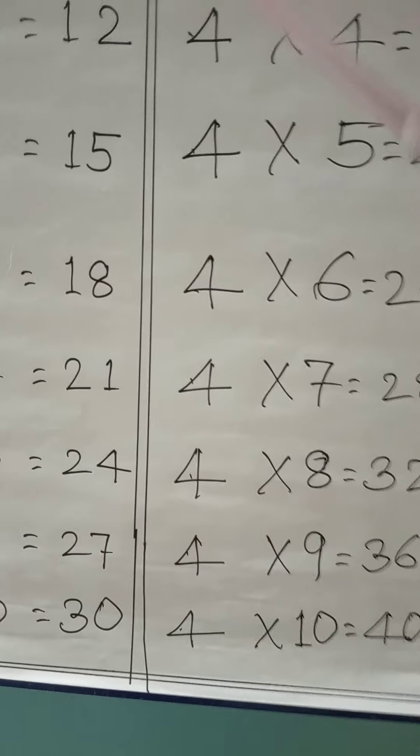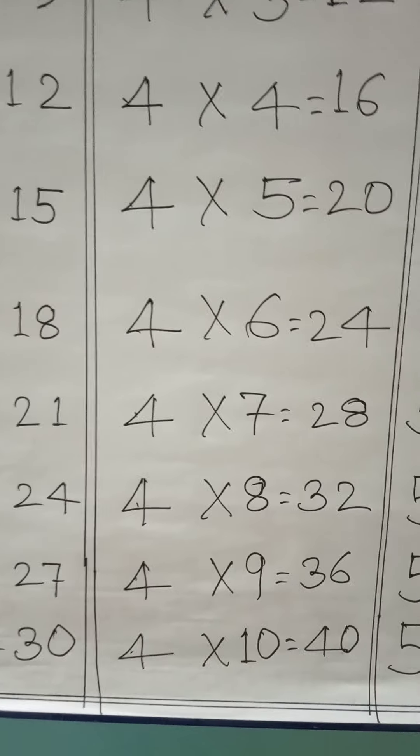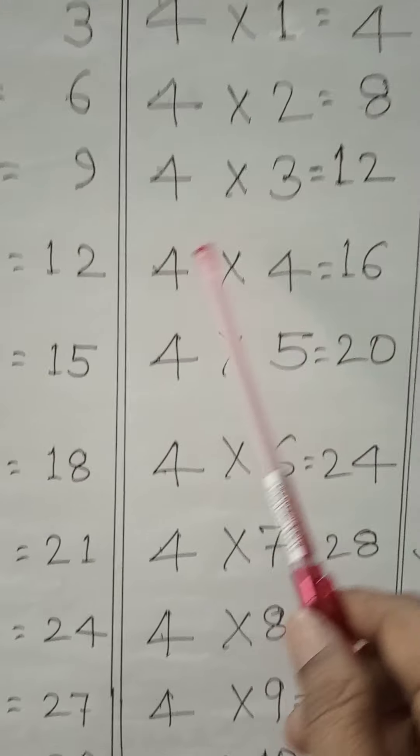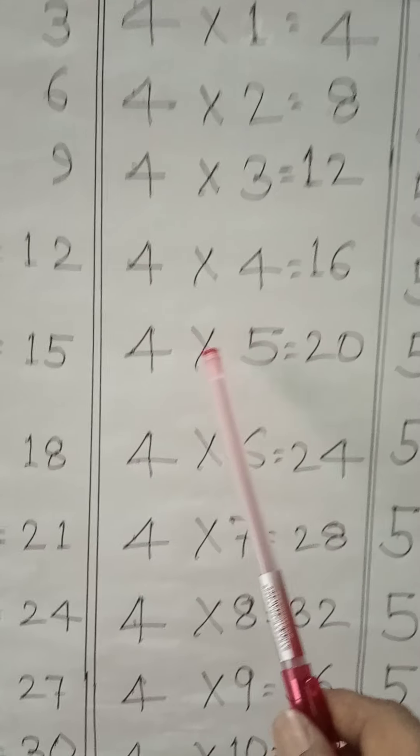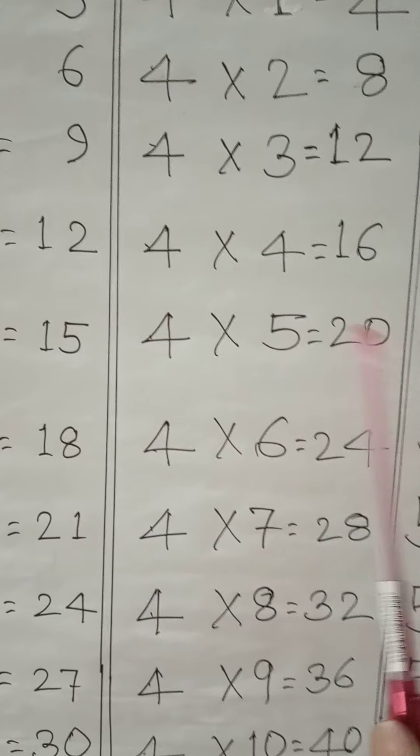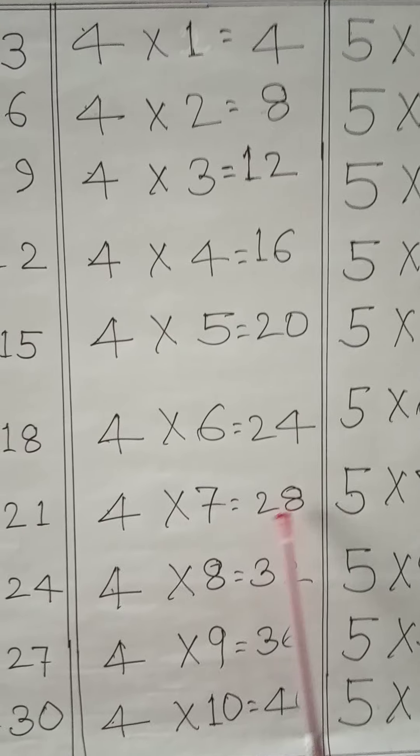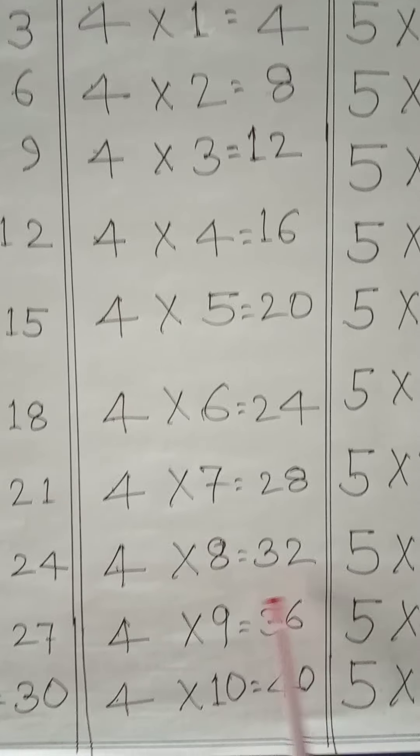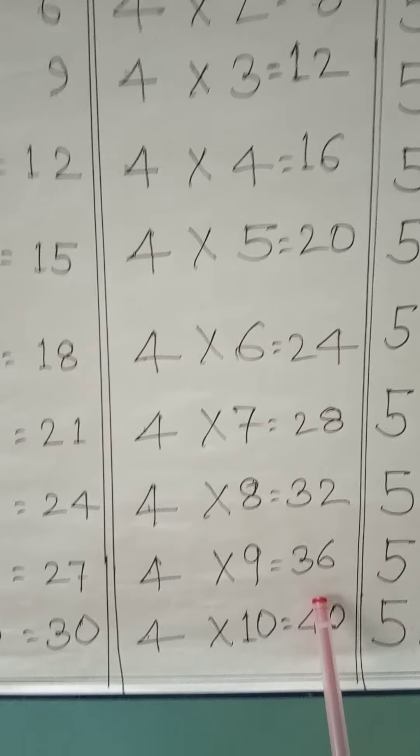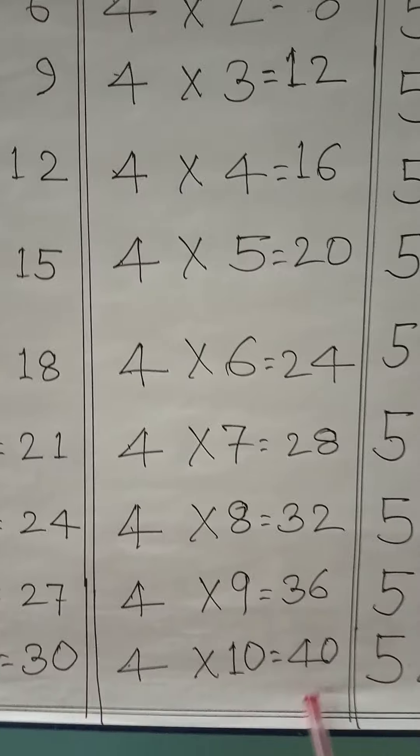4 × 1 = 4, 4 × 2 = 8, 4 × 3 = 12, 4 × 4 = 16, 4 × 5 = 20, 4 × 6 = 24, 4 × 7 = 28, 4 × 8 = 32, 4 × 9 = 36, 4 × 10 = 40.